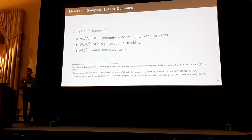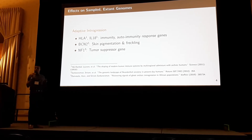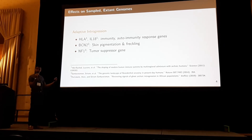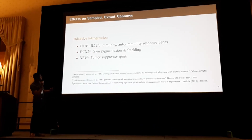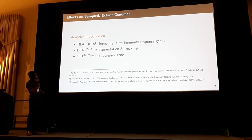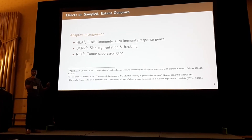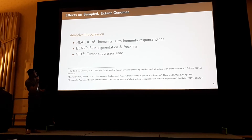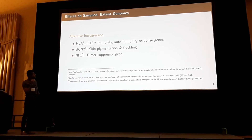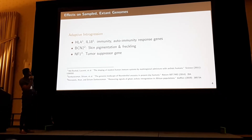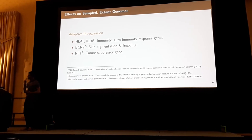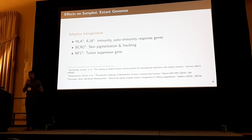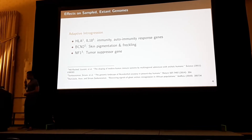We know that there are a lot of effects of unknown ghost population gene flow into current extant genomes. There have been a lot of functional variants identified in recent studies — a whole bunch of these have to do with genes that have introgressed adaptively from Neanderthals into human populations, some relating to immunity, immune response genes, skin pigmentation, freckling, and tumor suppressor genes.